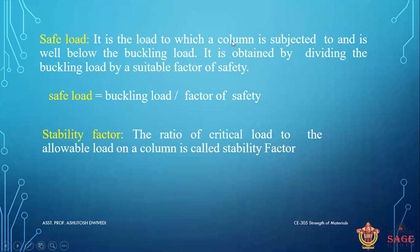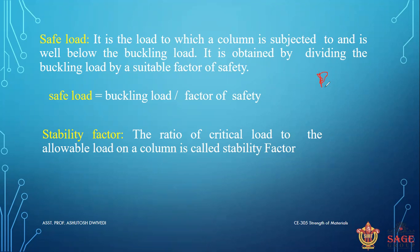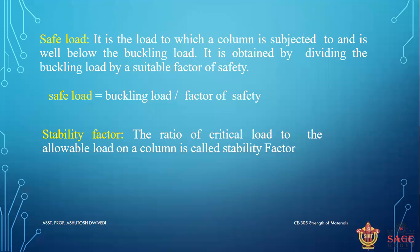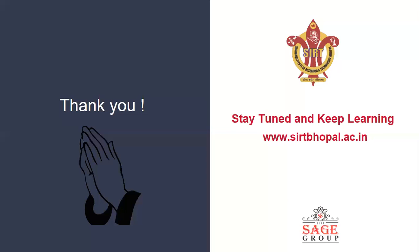The buckling load is a failure load. The safe load is obtained by dividing the buckling load by the factor of safety — it is the load which the column is subjected to, well below the buckling load. The ratio of critical load to the allowable load on the column is called the stability factor. That covers the basics of column. Thank you so much.